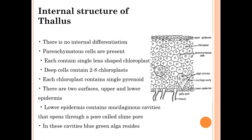Regarding the internal structure of the thallus, you can see in the diagram: parenchymatous cells, chloroplast, upper epidermis, and lower epidermis. There is no internal differentiation. Parenchymatous cells are present; each contains a single lens-shaped chloroplast. Deeper cells contain two to eight chloroplasts, and each chloroplast contains a single pyrenoid. There are two surfaces: upper and lower epidermis. The lower epidermis contains mucilaginous cavities that open through a pore called a slime pore. In these cavities, blue-green algae reside.